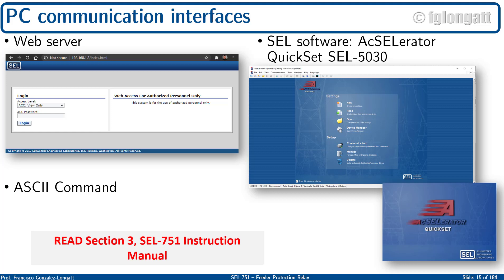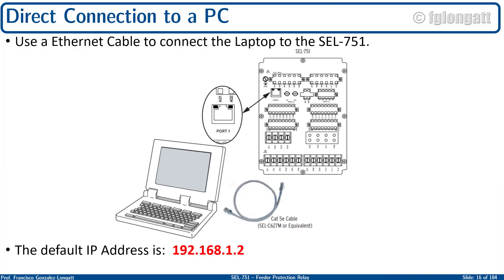The first thing you need to know is that if you have the device outside the installation — isolated with DC supply to your feeder protection relay — you can use the Ethernet port, the RJ45 at the back or rear side of this relay. You connect a classical Ethernet cable from the relay to your personal computer, and that's all.